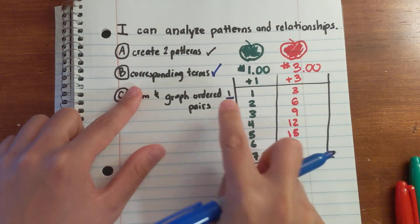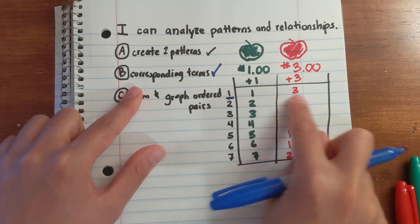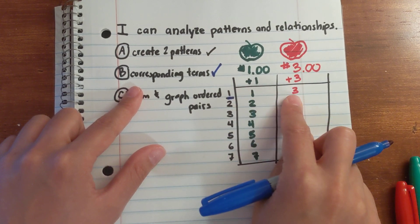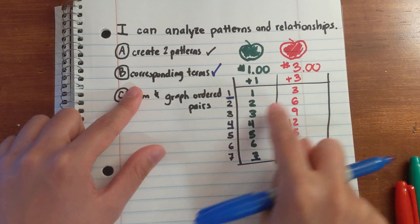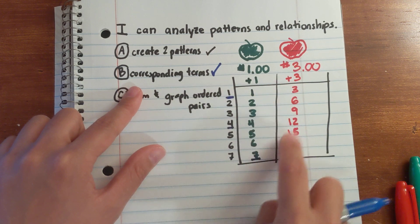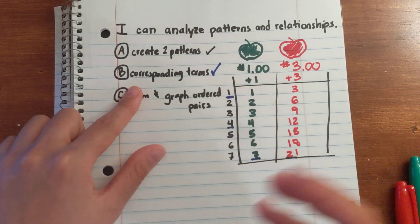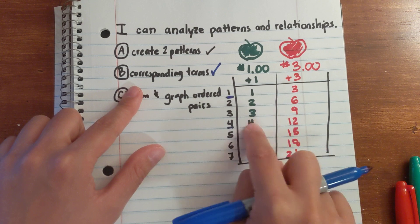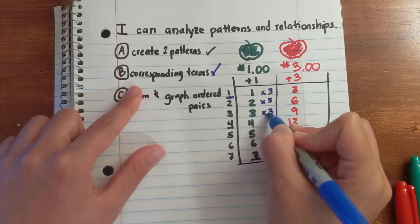Your first term is one and three — they're both the first term. 'Corresponding' is a fancy way of saying 'buddies' — these two are buddy terms. One and three are buddy terms; four and twelve are buddy terms; seven and twenty-one are buddy terms. There is a consistent relationship between these terms. Since the values are increasing using whole numbers, you must be multiplying or adding. I can see that multiplying by three works.